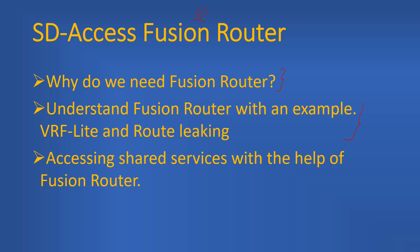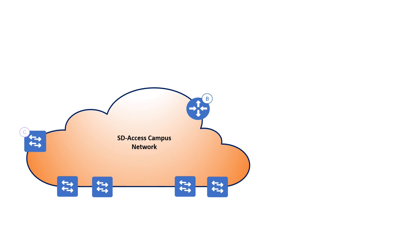Consider this diagram. Here we have our SD Access campus network. These are the edge nodes, here is the control plane node, and we have our border node. If you have any doubt about these nodes, please have a look at my previous videos of this educational series.